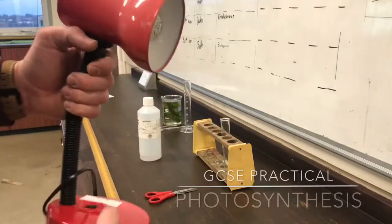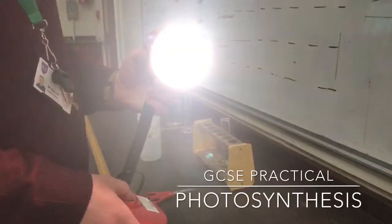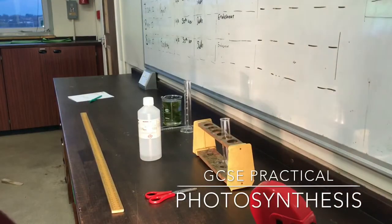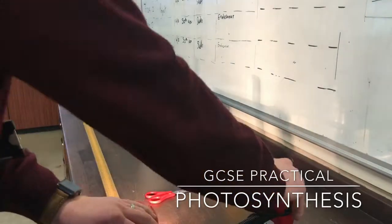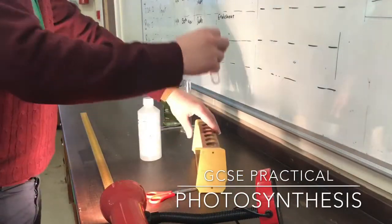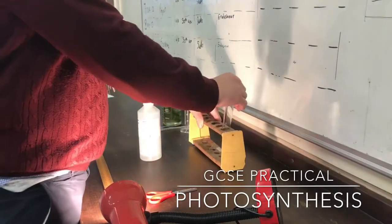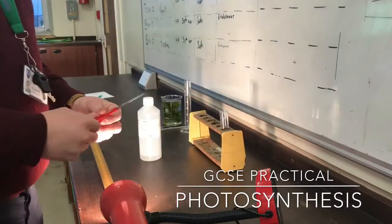Welcome to our GCSE photosynthesis required practical for AQA students. This is measuring the rate of photosynthesis in a plant. You'll notice I have a lamp ready with the equipment and the boiling tube and the test tube rack.